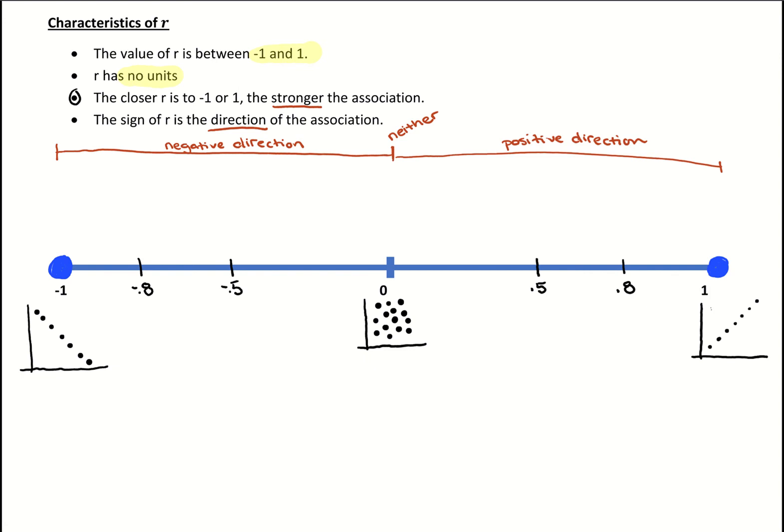This is kind of weird, but the strongest strengths are at positive 1 and negative 1. As we move to 0 towards the middle, it becomes weaker. On this number line, if we land between negative 1 and negative 0.8, we say the strength is strong. Same thing between positive 0.8 and positive 1. If we have graphs there, on the left it'll be decreasing with very little scatter. From positive 0.8 to 1, it'll be increasing and very linear.